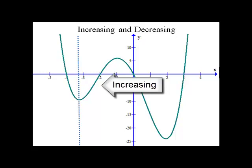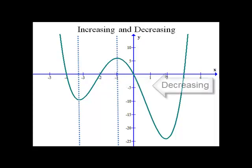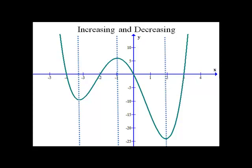Then it increases up to about negative one, where it stops and changes direction back to decreasing, right about to two — we'll just estimate it at two for this problem. To write the intervals where it's increasing and decreasing, we use what's called interval notation. It looks a lot like the ordered pair form of a point, but we're doing intervals of x values only. So this first place where it's decreasing comes in from negative infinity and decreases until about negative three point one. Then it switches to increasing from about negative three point one to negative one. Then it switches again back to decreasing from negative one to two. Finally, it increases the rest of the way, so we'd put it as two to infinity.